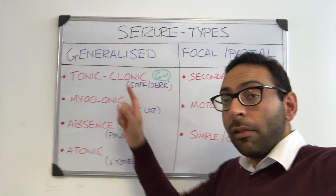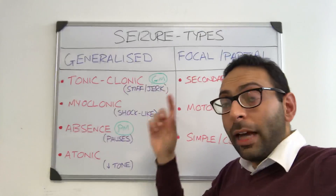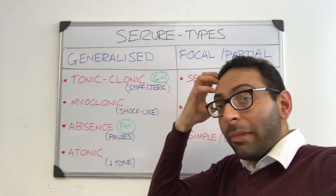So the two main types are generalized seizures, which affect the whole brain, and focal or partial seizures, which affect one part of the brain alone.